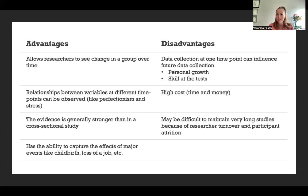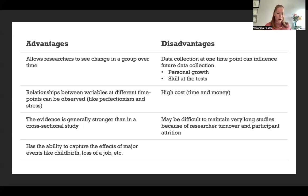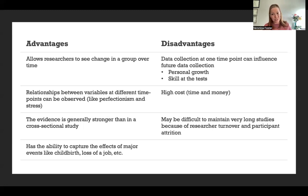Another advantage is that longitudinal research can capture major life events that you might not otherwise be able to see the result of. For example, in a study of perfectionism and stress among college students, if a participant already in the study has a baby, loses a job, loses a loved one, or experiences other major life events, the effects of those events can be captured through the study — whereas if they weren't already participating, we'd have no way of knowing how that event affected them.